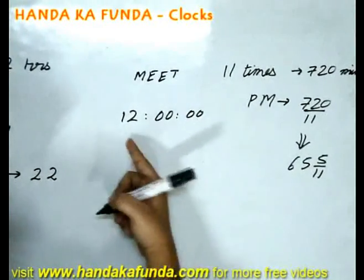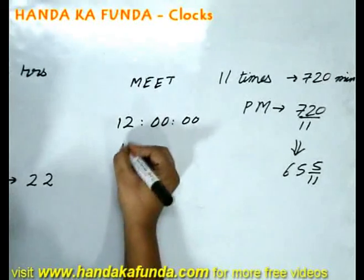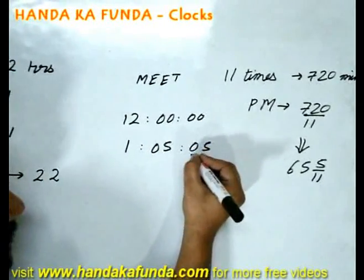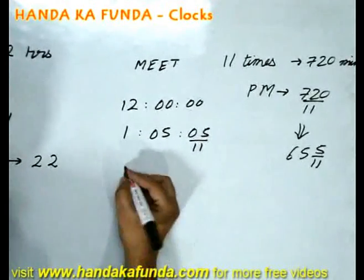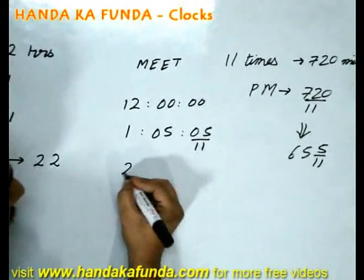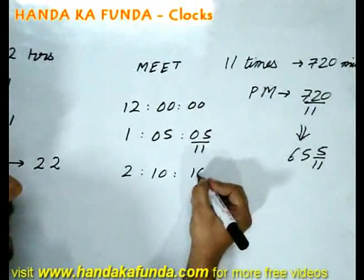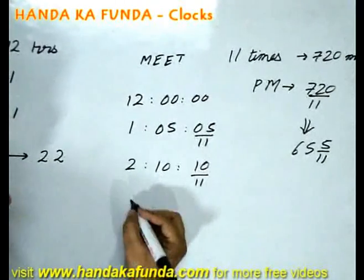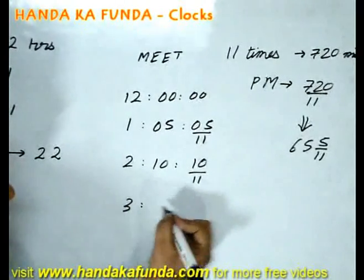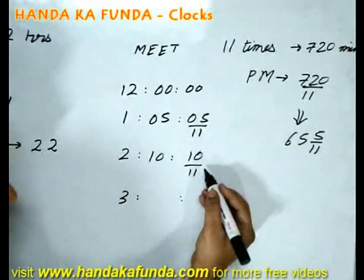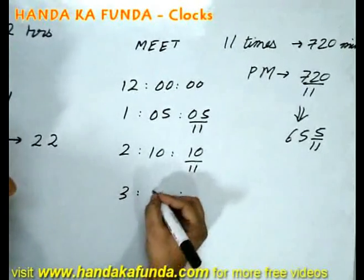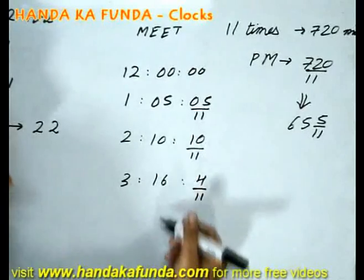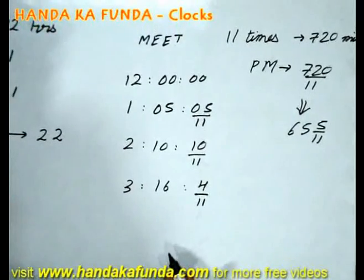After the first meeting at 12 o'clock, the next meeting will happen at 1:05 and 5/11. The one after that will happen at 2:10 and 10/11, which is 65 and 5/11 minutes after the first. The next one will be at 3:15 and 15/11, but since 15/11 is more than 1, this becomes 3:16 and 4/11. Similarly you can figure out the rest as well.